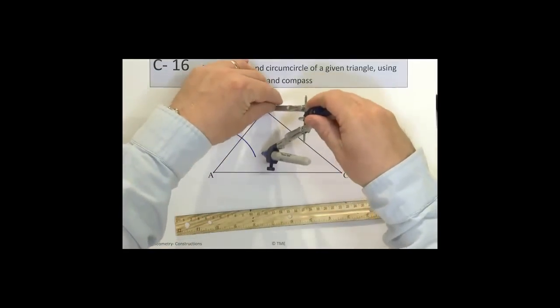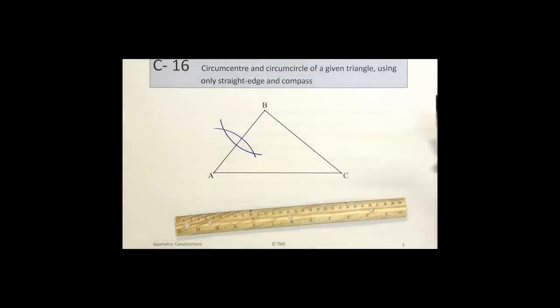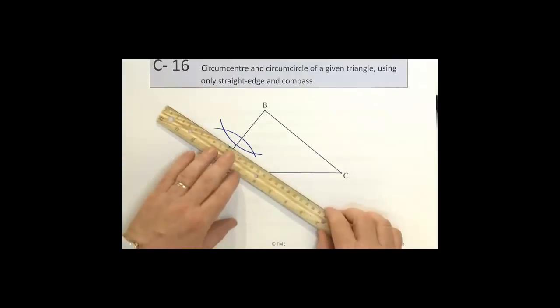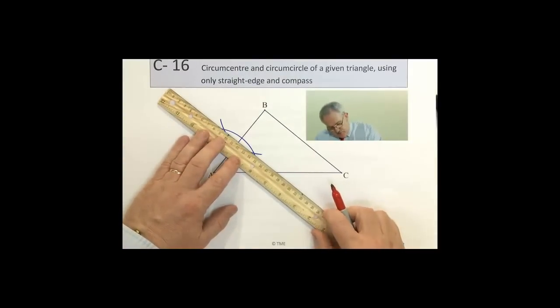And at B, using the same radius, I draw another arc. And from here, I can see that there are two points of intersection. And using a construction line, then, through there, possibly using red.